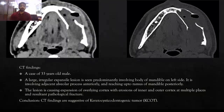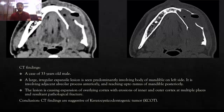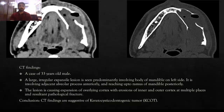Second case: a 33-year-old male. CT findings show a large irregular expansile lesion in the body of the mandible, with expansion involving the inner and outer cortex. Multiple pathological features are noted.